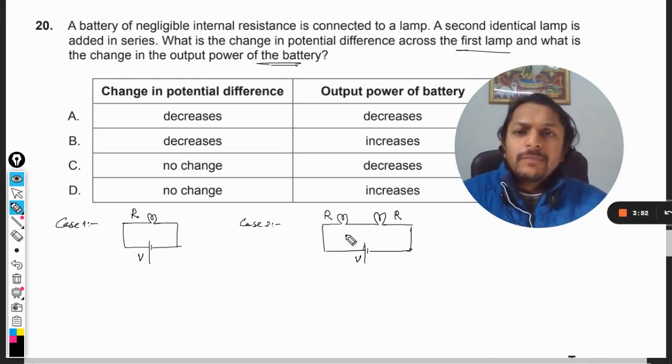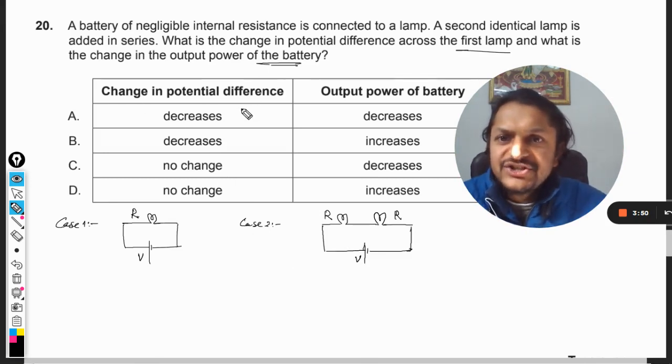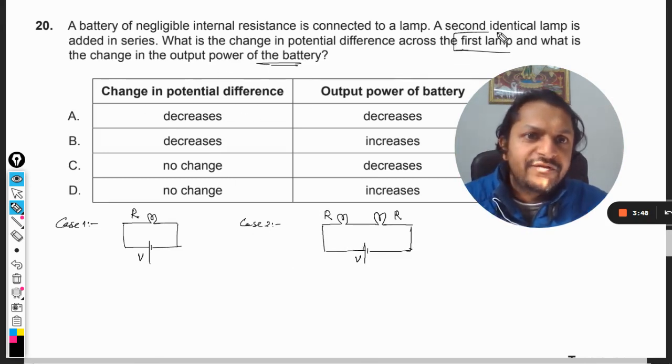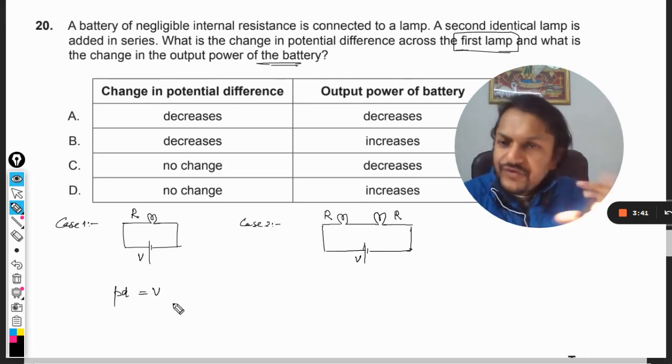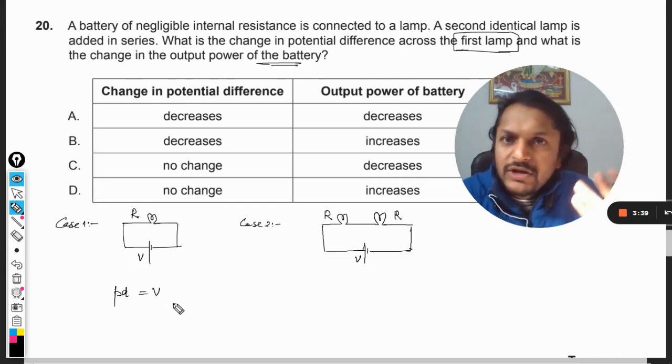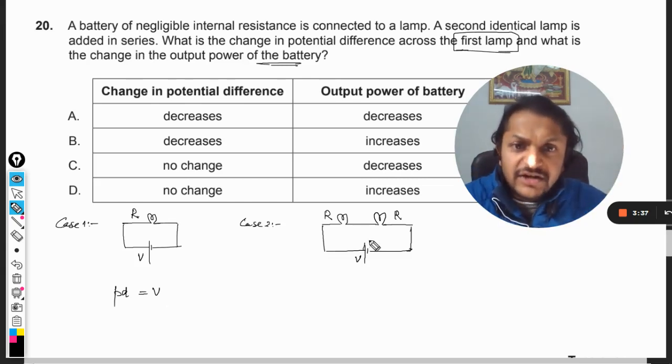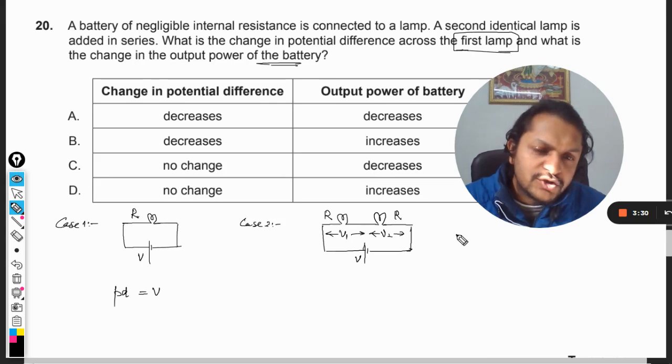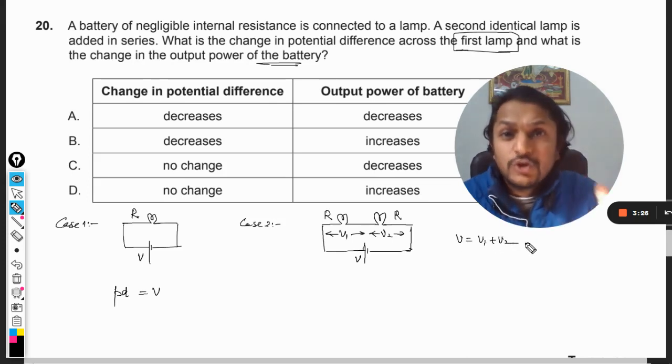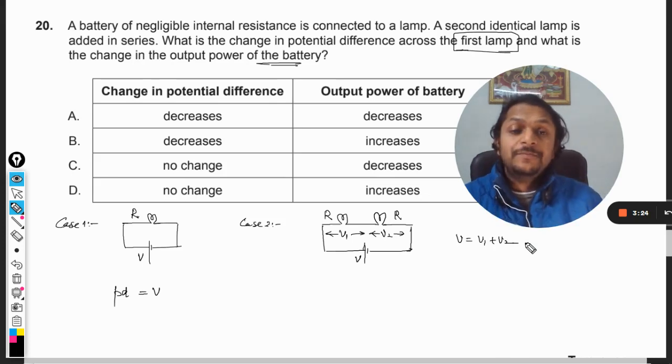My question is what is the change in the potential difference of the first lamp? In this case, the potential difference across this PD will be equal to V only, because there is only one resistance here. But here the potential will be divided - this will become V1 and this will be V2. So V will be equal to V1 plus V2 because this is what we do in series combination.